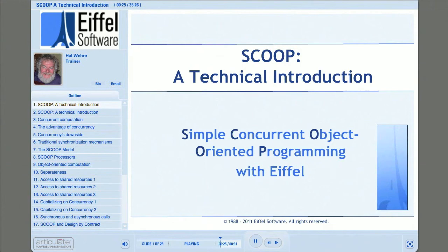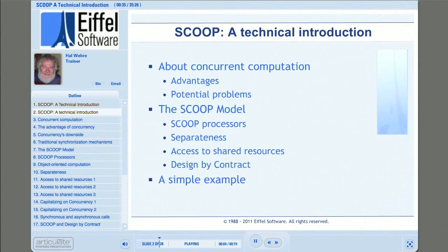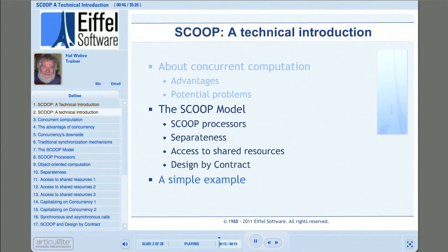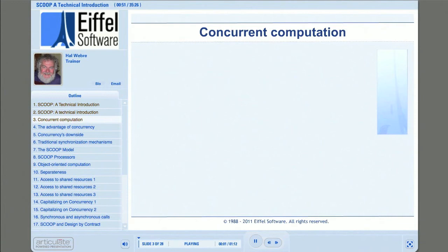If you're new to Eiffel, you might want to view the Eiffel Overview and the Design by Contract presentations before you watch this one. Here's our agenda: we'll start off with a brief review of what concurrent computation is all about, then get into the details of the SCOOP model of concurrency. Finally, we'll dissect an example from the Eiffel Studio distribution and look at the facilities of SCOOP in action.